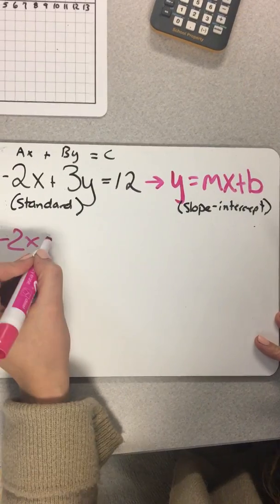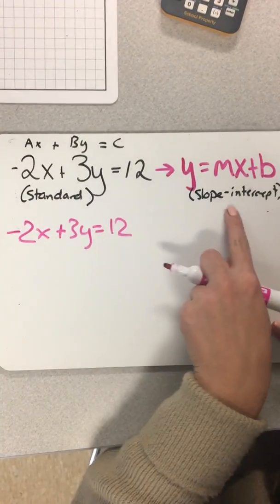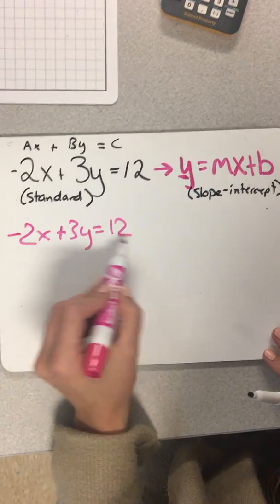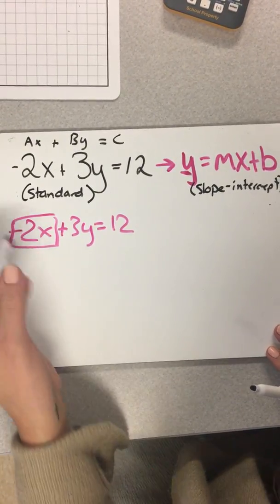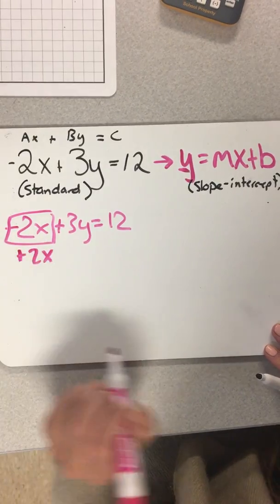So here's our standard form: negative 2x plus 3y equals 12. We're going to turn it into slope-intercept. We're going to get the y by itself. So how we start to do that, we have to get rid of this negative 2x to start. So how we get rid of negative 2x on one side is by adding 2x.